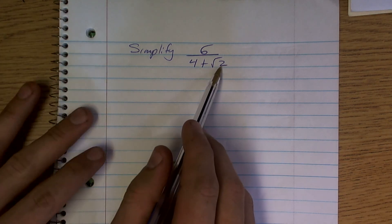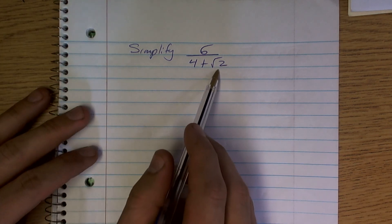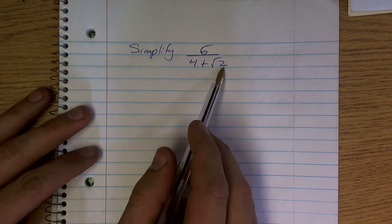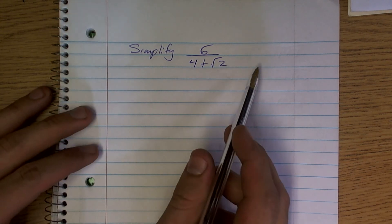We cannot have a root on the bottom, the radical on the bottom, because it's an irrational number. So we have to get it off the bottom.